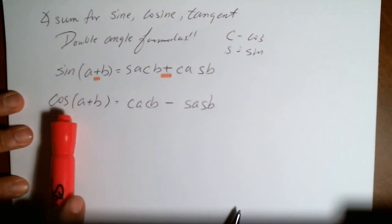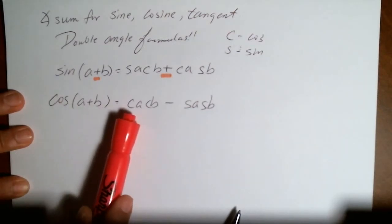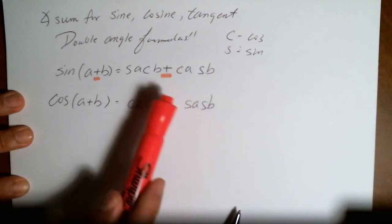The cosine of the angle of A plus B is equal to cosine, cosine, sine, sine, A, B, A, B.